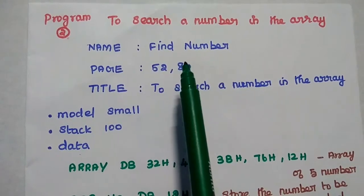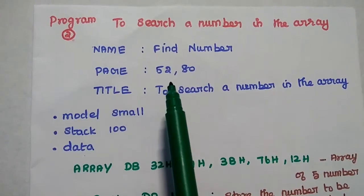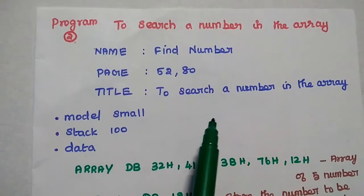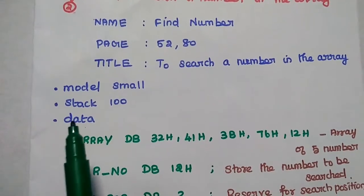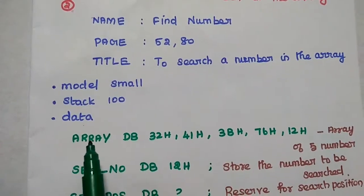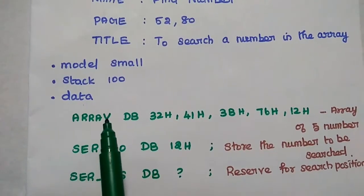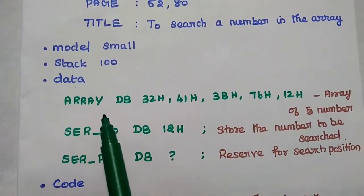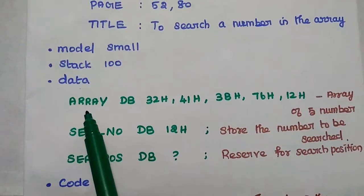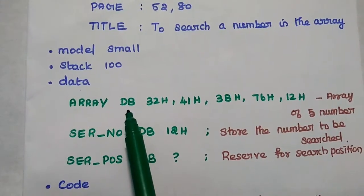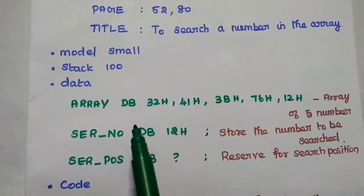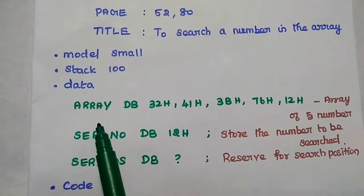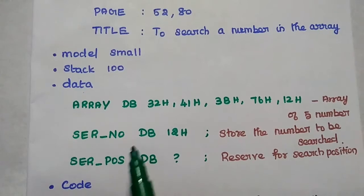Here the name of that module is 'find number'. The page directive is 52 comma 80. The title is 'to search a number in the array'. Then we start the model and initialize the stack segment. The data segment stores the actual data. We are going to get an array of data — the data type is byte, meaning 8-bit data.